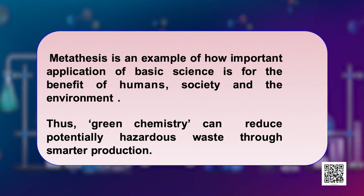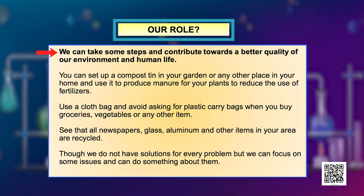Thus, green chemistry can reduce potentially hazardous waste through smarter production. Having understood these ideas, you may ask: what is our responsibility as human beings to protect our environment? We can also take some steps and contribute towards a better quality of environment and human life. You can set up a compost heap in your garden or any other place in your home and use it to produce manure for the plants you are growing instead of using fertilizers. You can also use a cloth bag and avoid carrying a plastic bag when you go to the market to buy groceries, vegetables or other items. You should also ensure that all newspapers, glass, aluminium and other items in your area are being properly recycled.